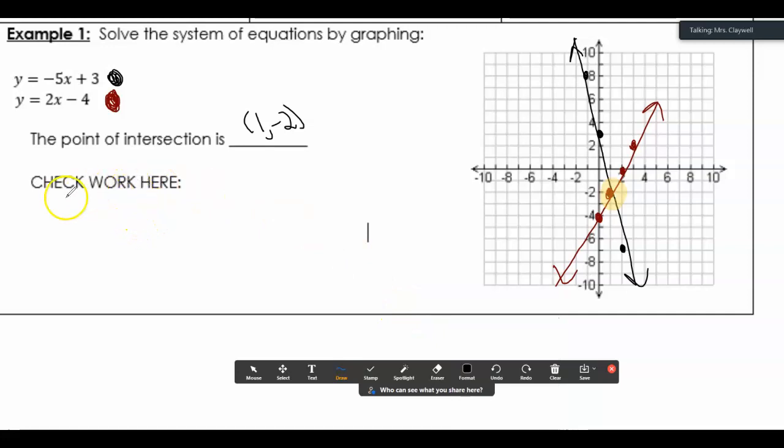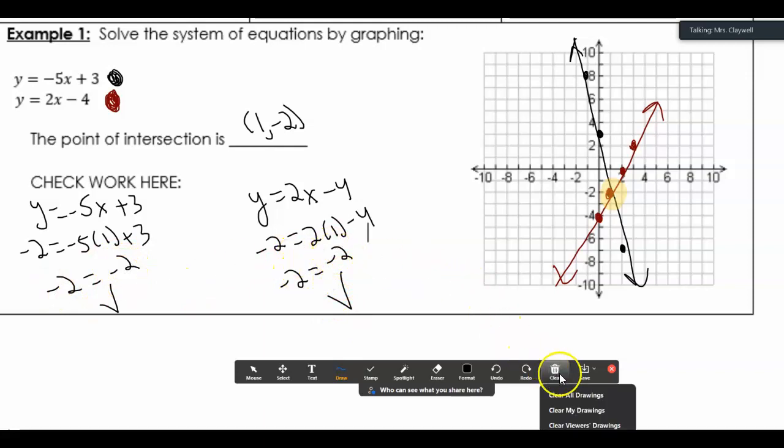So to check the work here, I'm going to write each equation. And then where I see an x, I'm going to put in a 1. And where I see a y, I'm going to put in a negative 2. And I got a true statement. So negative 2 does equal negative 2.